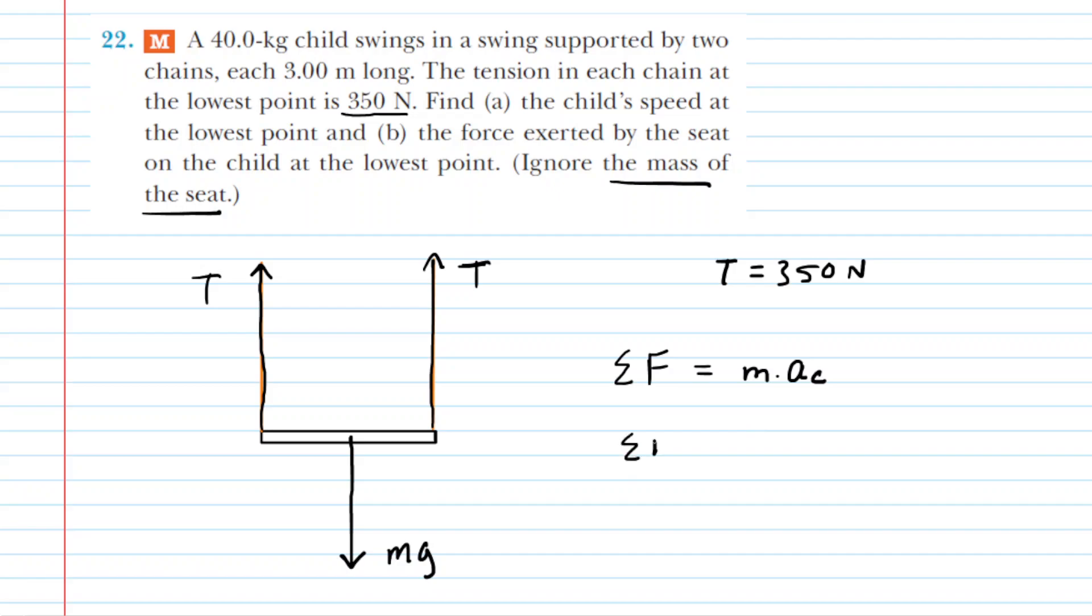Now, centripetal acceleration can be further expanded into the speed of the swing squared divided by the radius of the circular path. Now, as far as the radius is concerned, that is simply going to be the length of each of the chains. So we might write down here that the radius is equal to 3 meters.